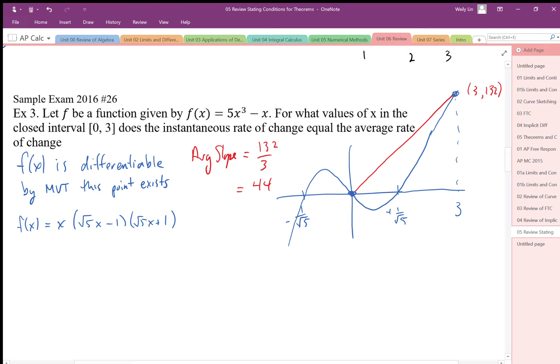So we want to then see where this instantaneous rate of change occurs. We know it's got to be somewhere, maybe somewhere in there. We don't know but we know that exists. So knowing from the mean value theorem, we're going to calculate the slope function and then see where that slope function is equal to 44.